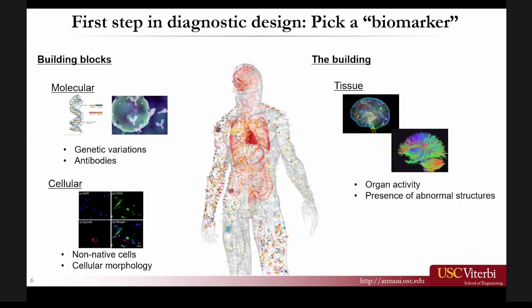The first step in trying to develop a diagnostic is to pick a biomarker. We've all lived this the past couple of years: what is the best biomarker for a disease? For COVID, is it the antigen test, the antibody test, the PCR-based test, or the RNA or DNA-based test? Depending on what you're trying to detect, that indicator might be at the molecular level, the cellular level, or it might be at the tissue level. We were interested in looking at whether we should start looking for indicators of disease at a more holistic level, or whether individual genetic variations are sufficient.